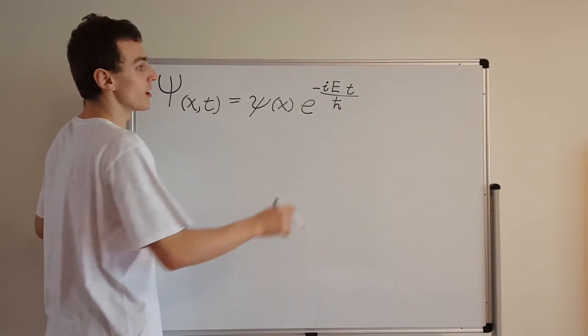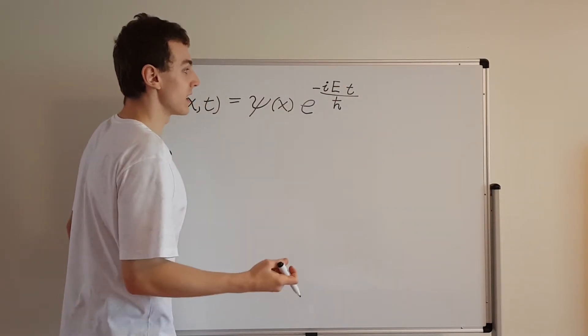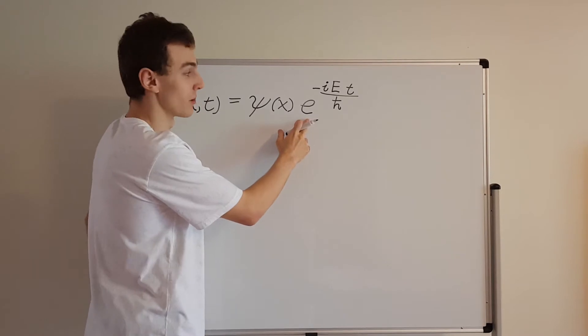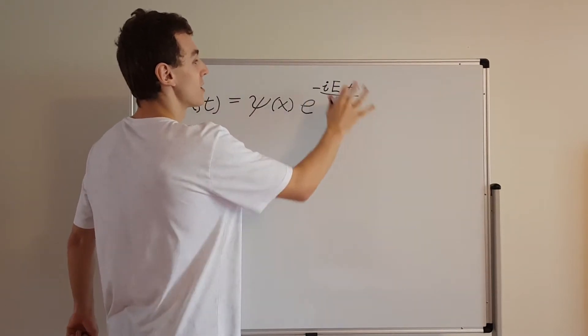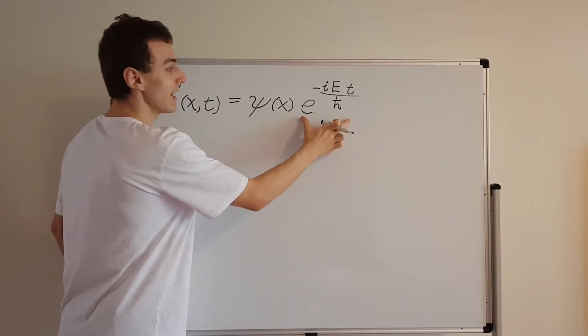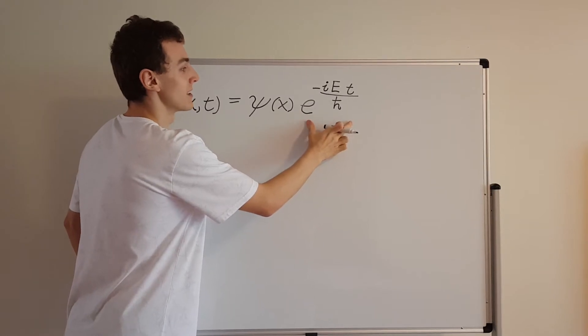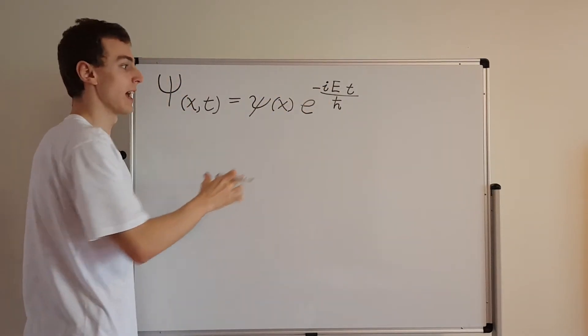So this E is the energy, while this e is Euler's number — they're different e's. This is just the exponential function. This exponential factor is how the time dependence is incorporated into the solution, and ψ(x) is how the position dependence is incorporated.